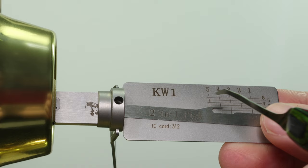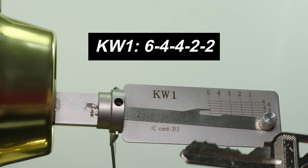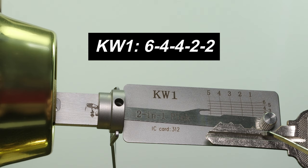So our bitting code is going to be six, four, four, two, two. We can compare that. We can take a look at our key, and we can compare that to the code that we got. So six, four, four, two, two. We can very clearly tell this is going to be a cut all the way at the bottom. So that is definitely going to be a six, followed by a four, a four, a two, and a two.